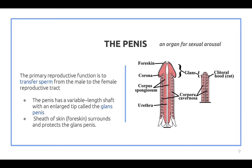The penis is the male organ for sexual intercourse and urination, and its primary function is to transfer sperm from the male to the female reproductive tract. The penis has a variable-length shaft with an enlarged tip called the glans penis, and there is a sheath of skin called the foreskin.